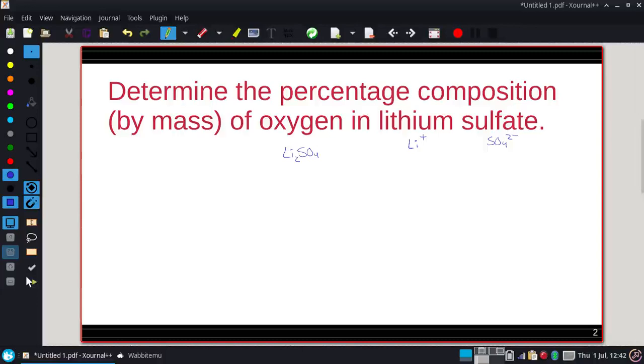Alright, now we need to go to the periodic table to get the molecular weight of oxygen and the lithium sulfate. Because to get the mass percent of oxygen, on top we're going to have the oxygen. So that's going to be 4 times the 16.00 grams per mole.